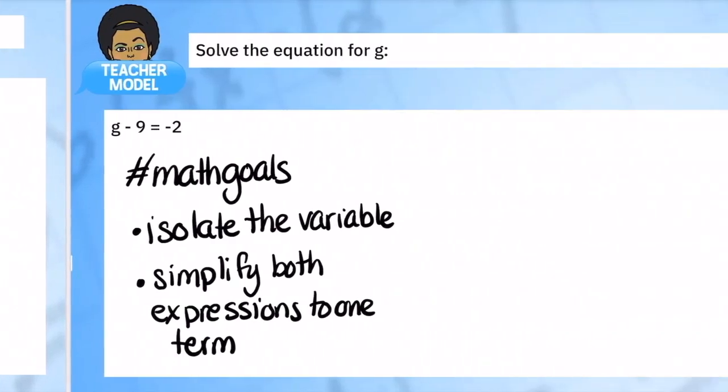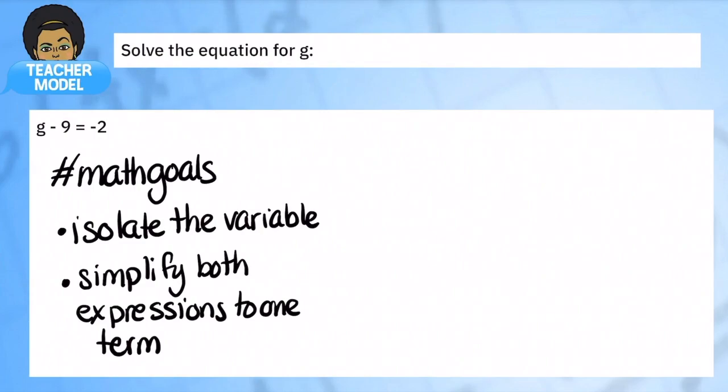So let's look at this first example. Here our math goals: Isolate the variable and simplify. In this case, we have a number minus 9 equals negative 2. And you can probably do this in your minds. I already know it, but for simplicity's sake, we still want to think thoughtfully about what our process is and not just getting the answer. How are we getting to that?